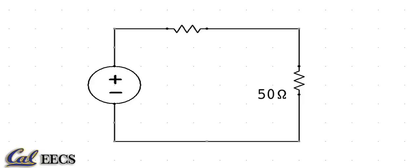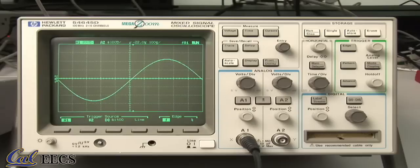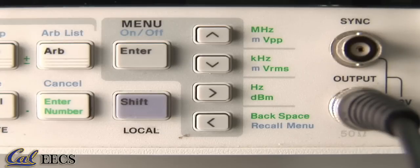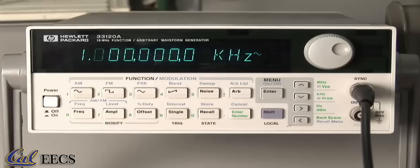For our purposes this is aggravating since we're working with loads much larger than 50 ohms, such as this oscilloscope which ideally has infinite resistance. The manufacturer has alleviated this by allowing you to change the settings so that the amplitude is accurate for large loads like this.